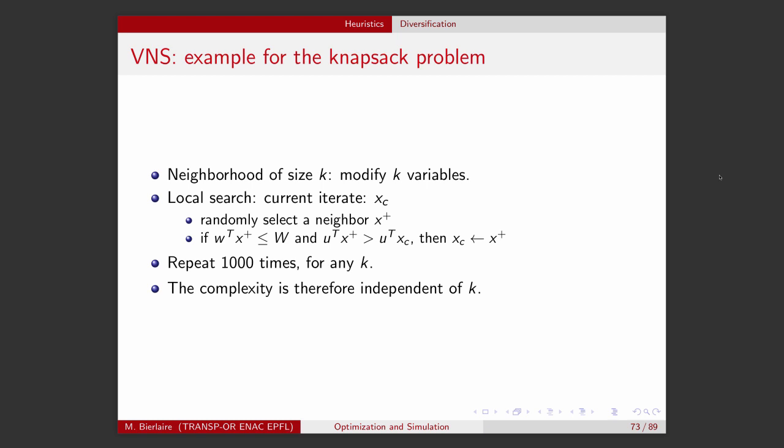Let's take an example with the knapsack problem. As we have seen, we can define a neighborhood of size k by modifying k variables — we consider k items and change the decisions made for them. We modify the local search slightly here: since the number of neighbors can be quite high depending on k, instead of enumerating all neighbors, we just randomly pick one.